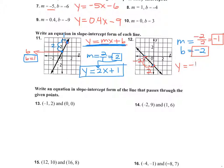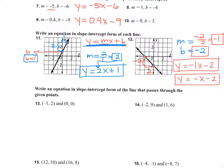My y-intercept is negative 2. So if I put that into slope-intercept form: y equals negative 1x minus 2. Technically you could write it like this — either one of these answers would be just fine. You don't have to put the 1 in because it's a negative 1; you can just put the negative in front. Either one is fine.